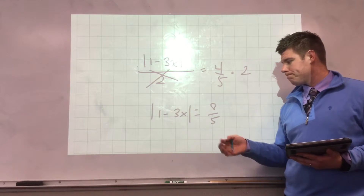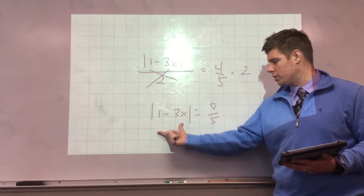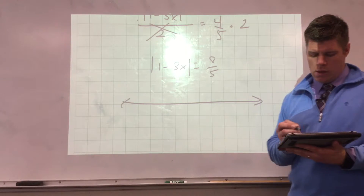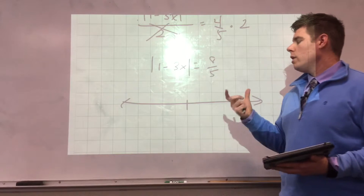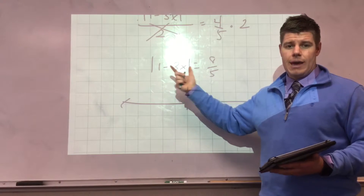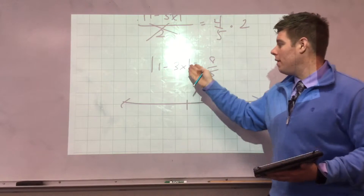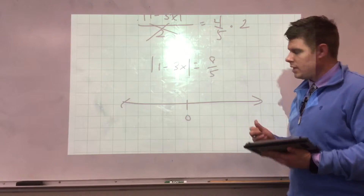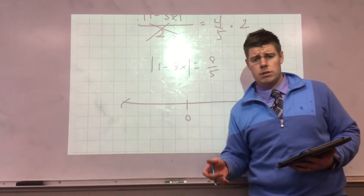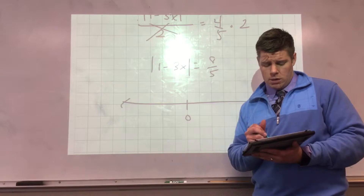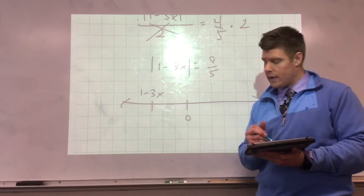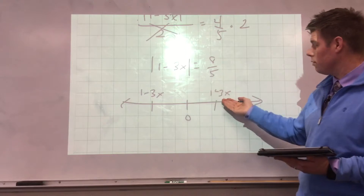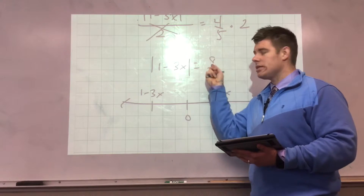Now I'll quickly show what you do once you have this step, because this is different as well. What we need to remember is that absolute value is a distance from zero. This expression tells you how far away from zero it is. Distance does not include direction, so we have to find both. If 1 minus 3x is over here, that's if I had traveled left; I could have also traveled right, so 1 minus 3x is also over here. This tells you the distance actually traveled.